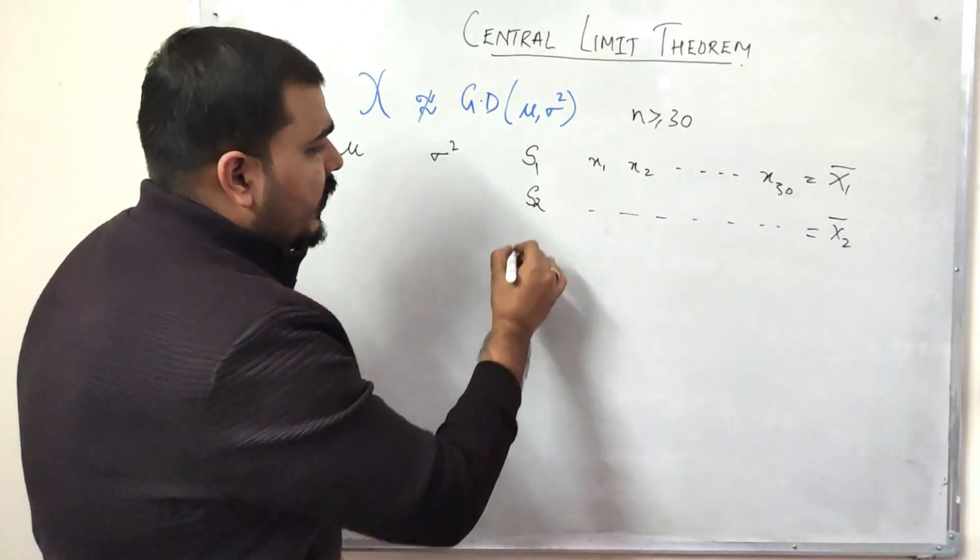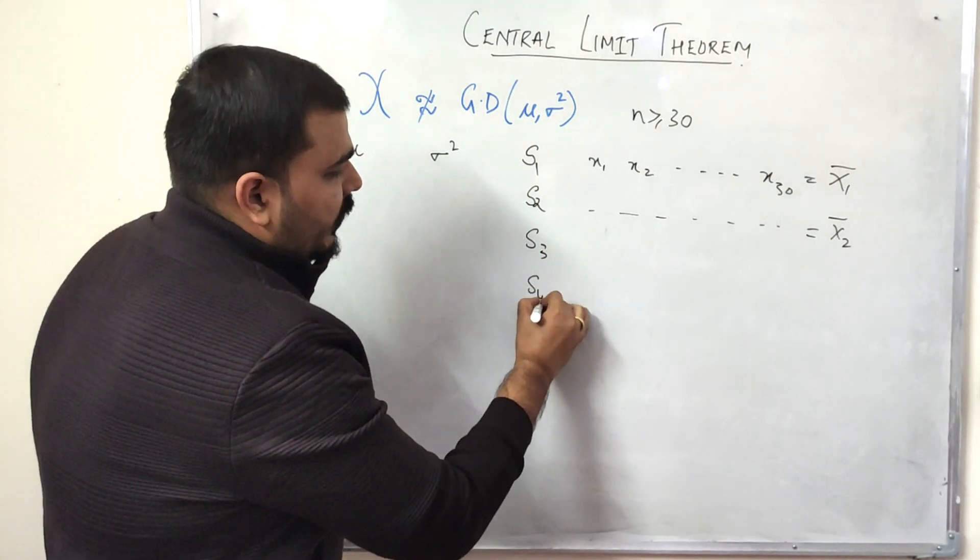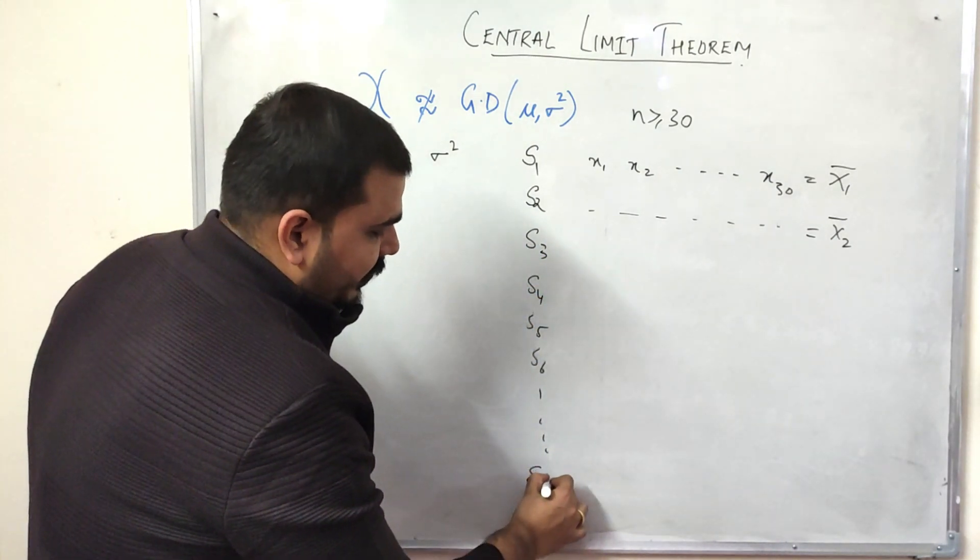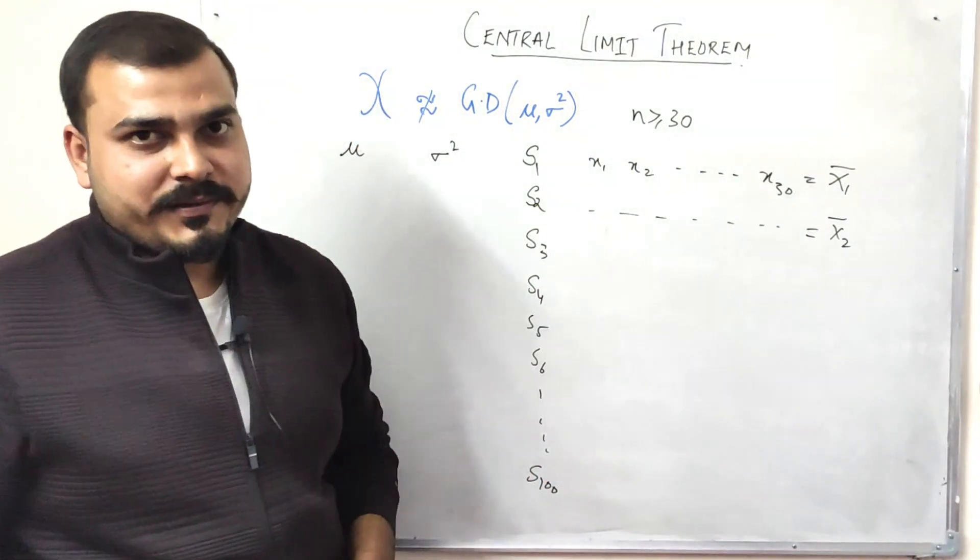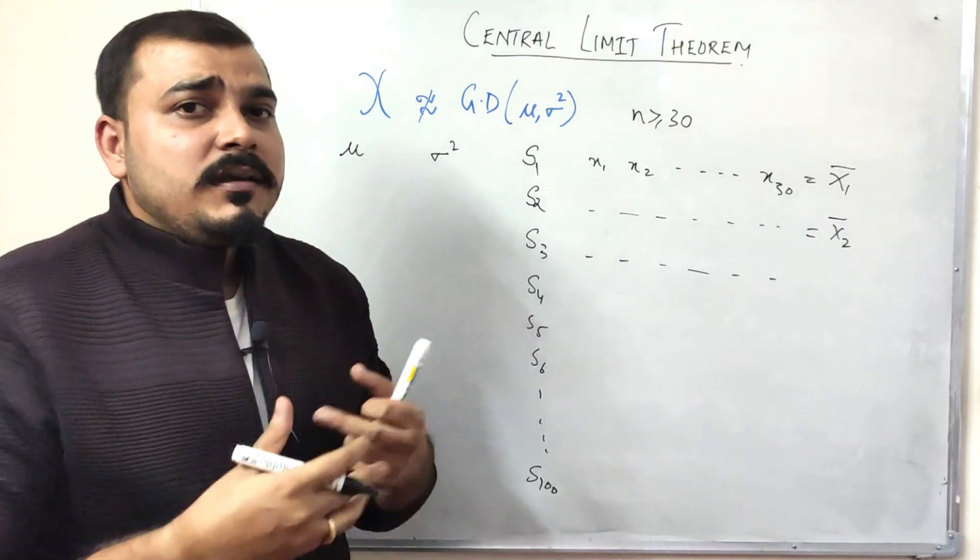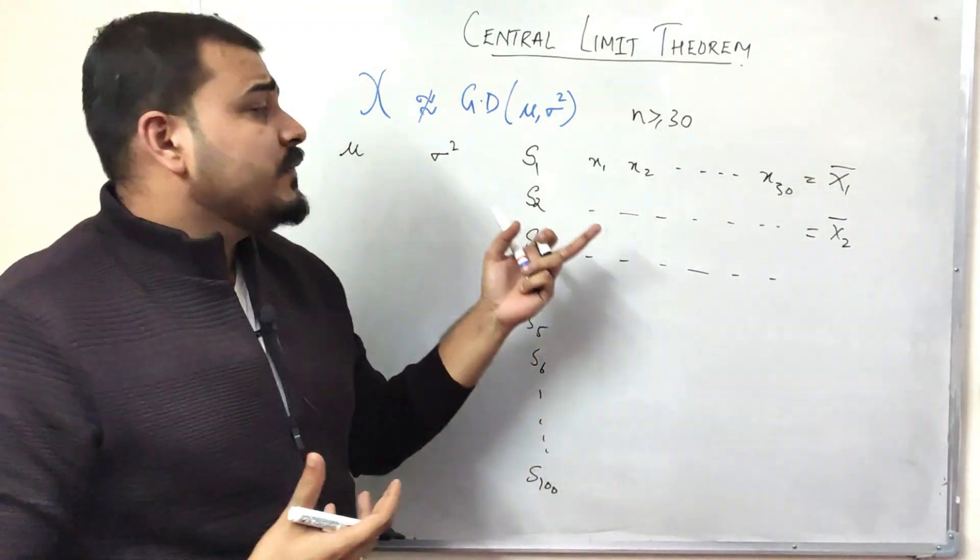Suppose I've taken till S100 samples, and every time I'm selecting 30 random sample data points from this random variable, making sure that my n value is greater than or equal to 30. Now, this n basically specifies my count of the sample values.